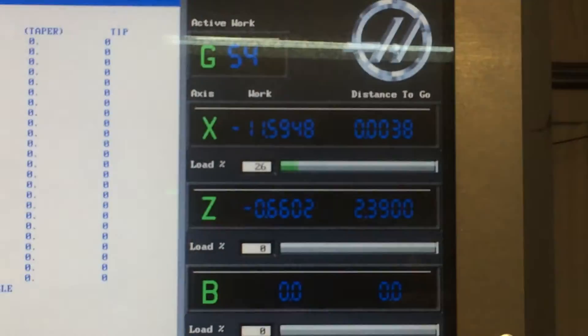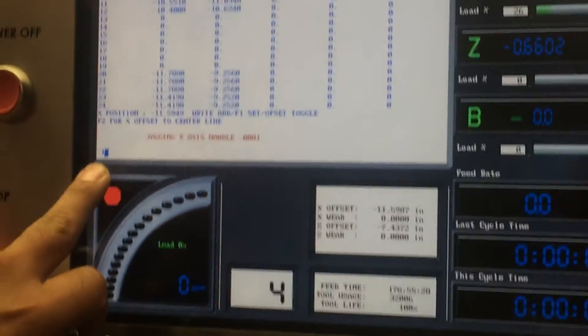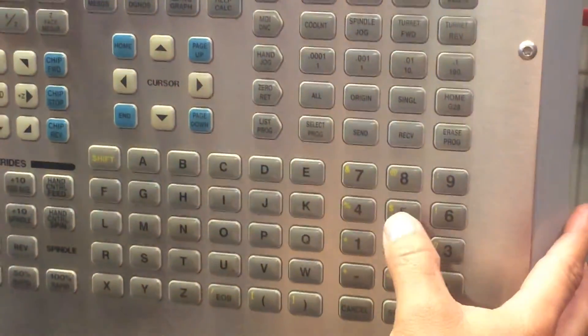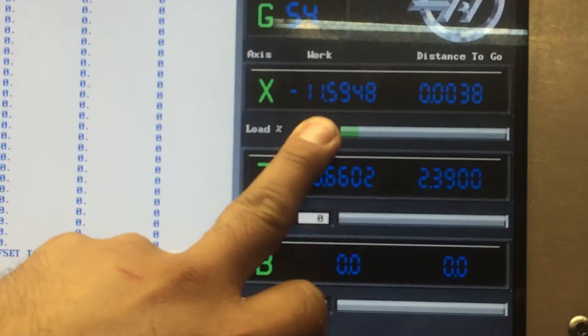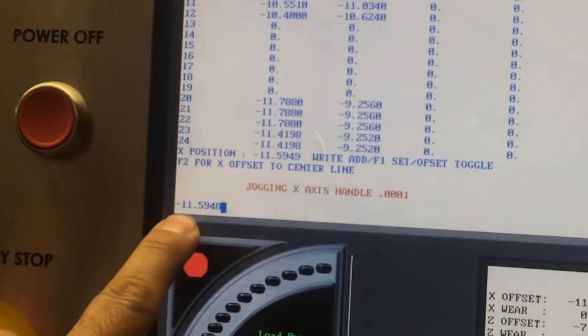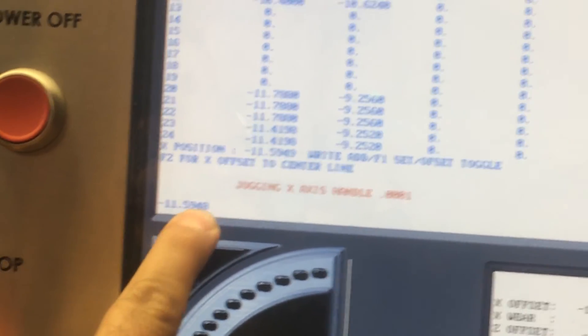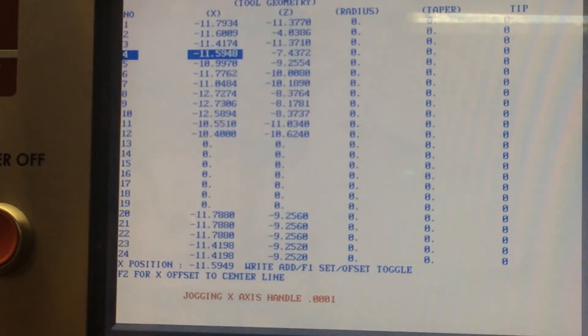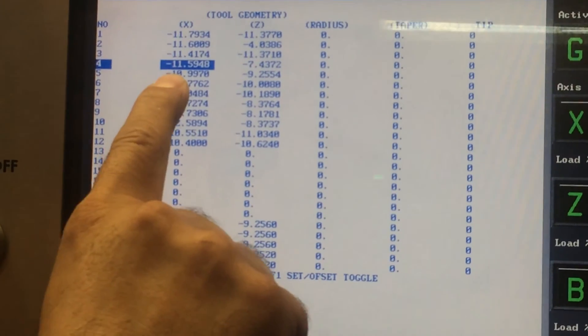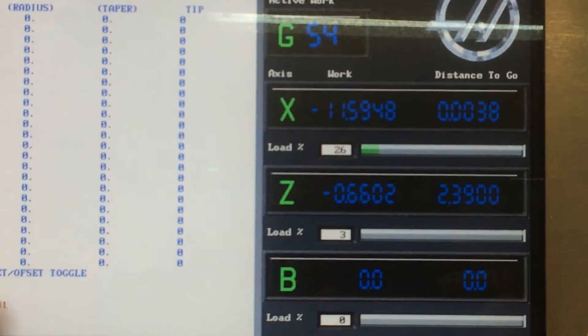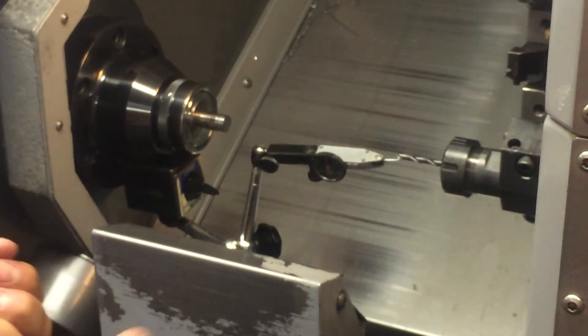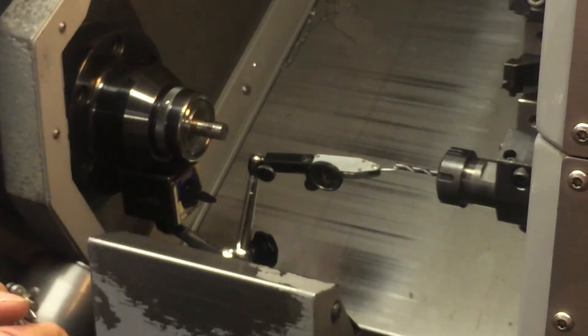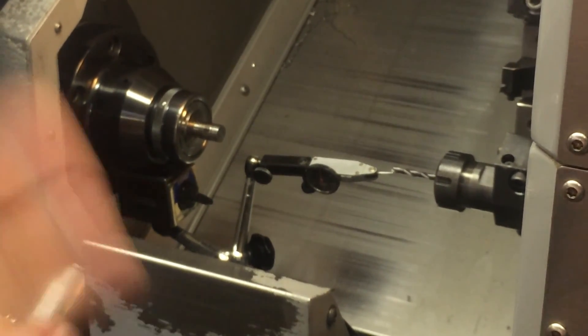We're going to type in this number first. So we got minus 11 inches, 0.5948. So let's verify it. Minus 11 inches, 0.5948. So these two numbers match right here. And now we're going to tell it F1 to put this number over there. So there we go. So now we have this number right here matching that number over there, which is the position where that drill is located right now. And that's how you indicate a drill on the x-axis on a CNC lathe. Thanks for watching.